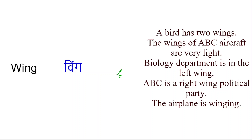Doostho, umeed hai ki aapko English ke word 'wing' ke different meanings samajh aa gaye honge. Ab time hua hai exercise ka. Exercise ke liye aapne English ke word 'wing' ko use karte hue English mein ek chhota sa sentence banana hai. Usse niche diye comments box mein post kar dena hai. Agar us sentence mein koi galti hoi toh hum mein se koi point out kar dega. Video pasand hai toh like ka button press karein, video ko share karein, aur iFactner ke channel ko subscribe karke bell icon ko press karein taka aapko naye naye video notifications milti rahein.